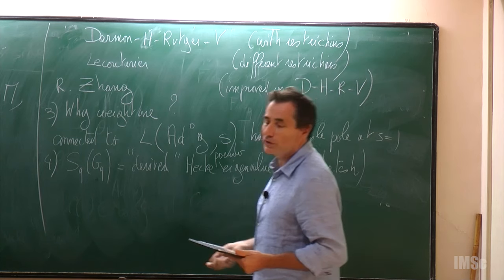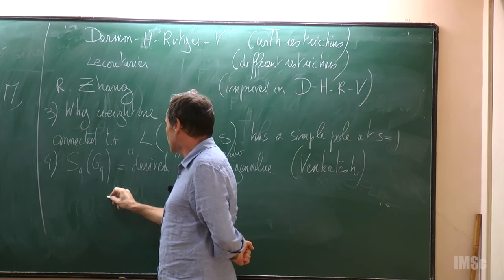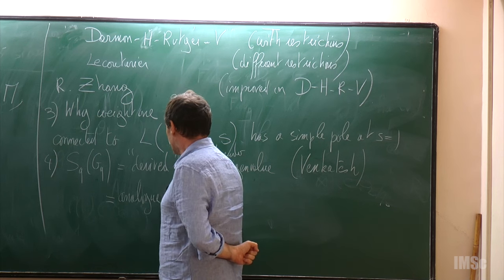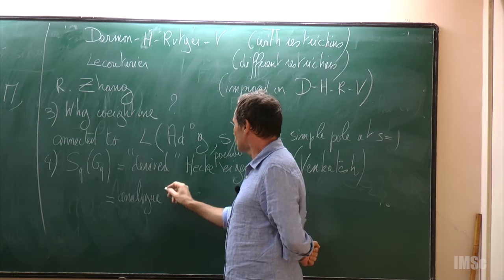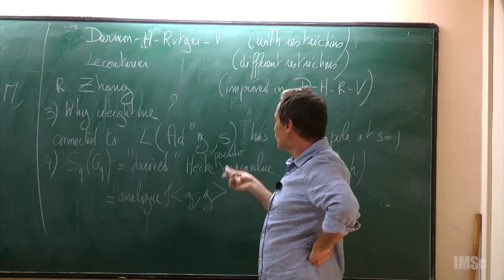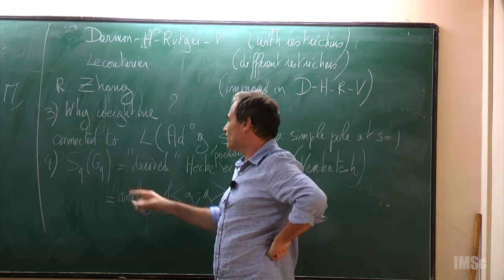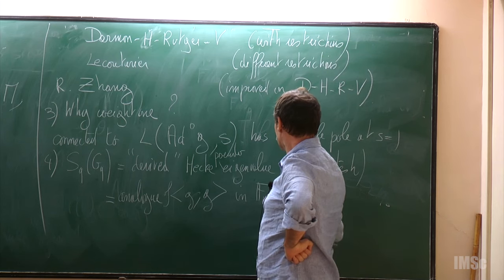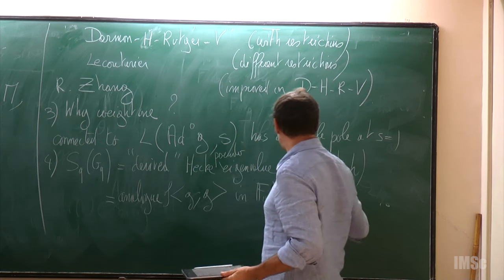Venkatesh has a general philosophy for this. Zhang has put forward another philosophy: this is the analog of the Petersson scalar product in FQ* ⊗ R. Recall we started from a modular form of weight one; you can consider its Petersson scalar product, which is a complex number, and this thing in FQ* ⊗ R is the analog of that.